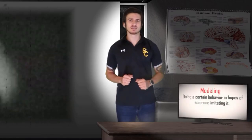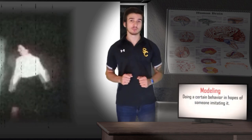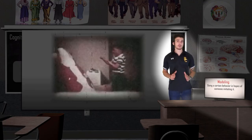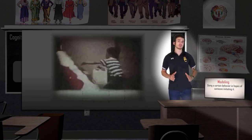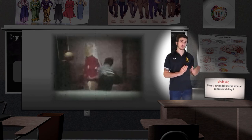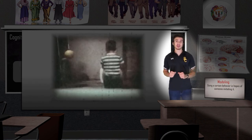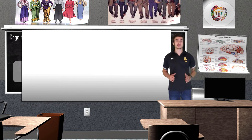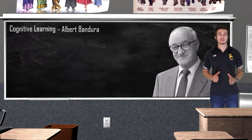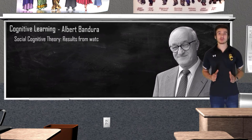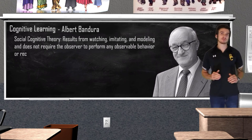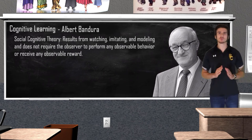A control group of children did not see the adult attack the doll. The children were then individually placed in a room with hundreds of toys and were secretly being observed by the researchers. Bandura's hypothesis was proven correct: children who observed aggressive adult behavior also acted aggressively towards the doll, while children who did not observe the adult attacking the Bobo doll did not show aggressive behavior. This data gave Bandura the foundation for his social cognitive theory of learning, which states that learning can occur as a result of watching, imitating, and modeling behavior — the observer does not have to perform any observable behavior or receive any reward.